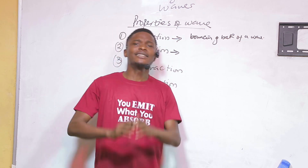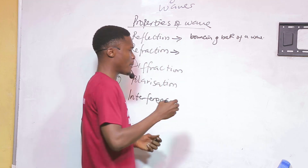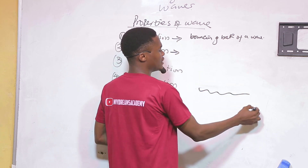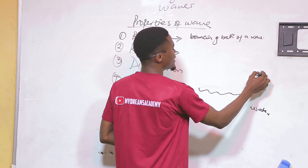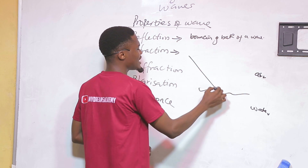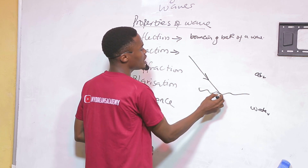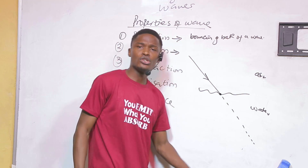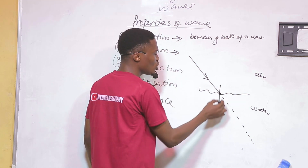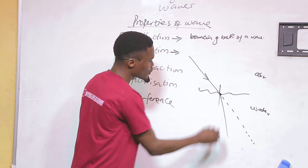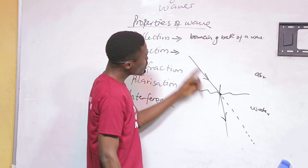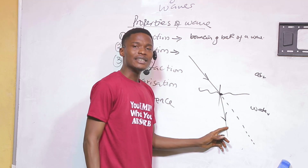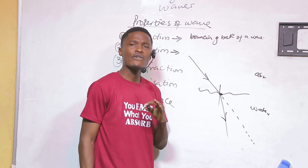A medium is something through which a wave can be propagated. Imagine you have water and air on either side — this is the boundary between air and water. When a wave enters the water, it does not continue on its original path. It is going to be refracted. Once it crosses the boundary between two media, it changes direction, and that change in direction is what we call refraction.